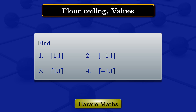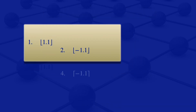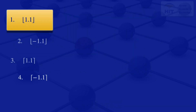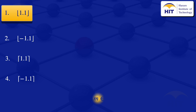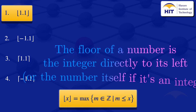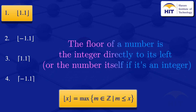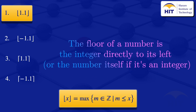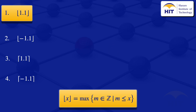In this tutorial we're going to look at the floor and ceiling values. We'll start by looking at the floor value of 1.1. By definition, the floor of x is the greatest integer that does not exceed x. Simply put, the floor of a number is the integer directly to its left, or the number itself if it's an integer.